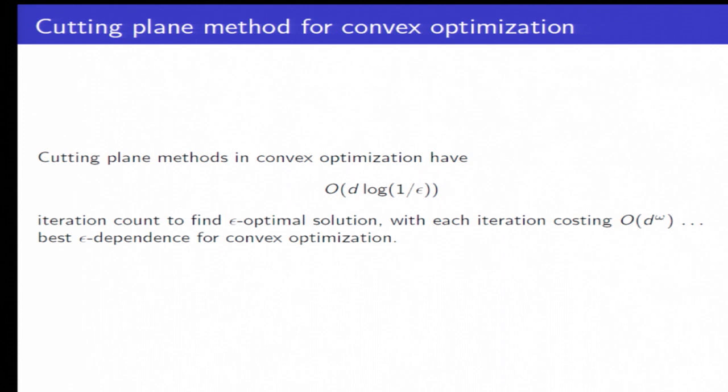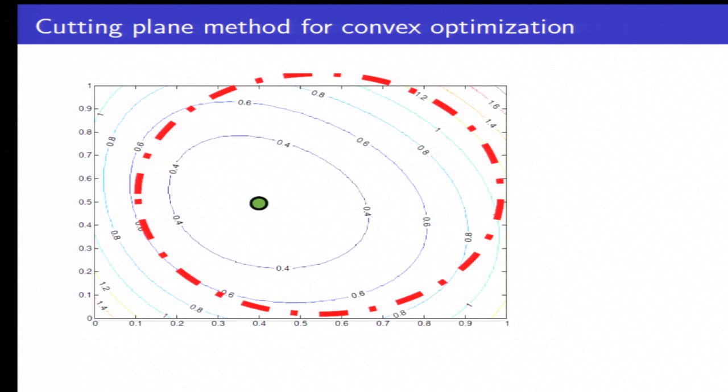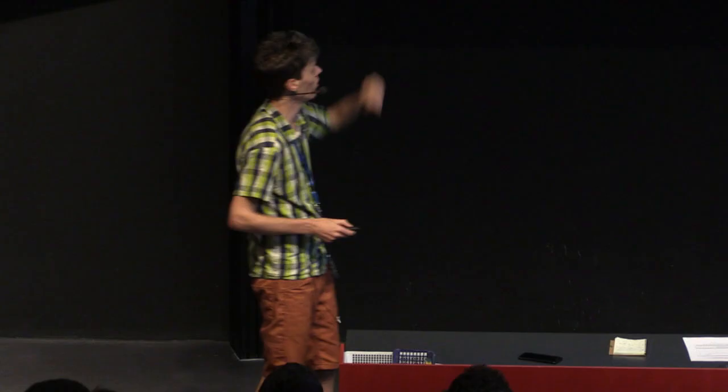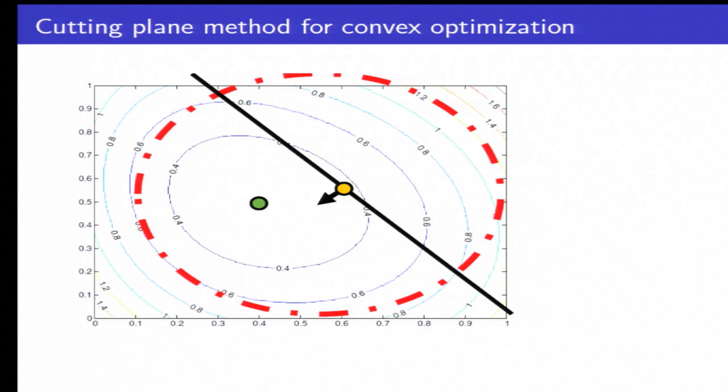All right. So just for a quick refresher for people who haven't seen cutting plane methods for a while, here we've got a convex function, and we're going to run a cutting plane method. We start with some ball where we know our optimum lies. We add in a cut which essentially says the optimal solution must lie on this side. And we can keep on doing that. We add another cut. And then we add a third cut in there. And we've isolated essentially a region where the global optimum must lie. And eventually that region gets very, very tiny, and then we've effectively found the global optimal.